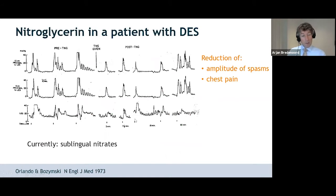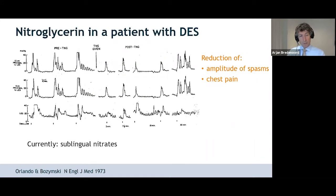Here's an old case report on the use of nitroglycerin in a patient with DES — it reduced the amplitude of spasms and reduced chest pain. Currently, sublingual nitrates are used more often, but again, there's no recent study to vividly show that this really works.